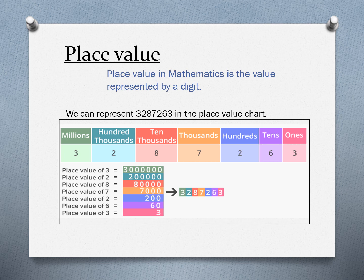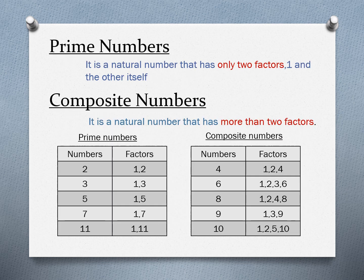Three is in the millions place and its place value is three million. Two is in the hundred thousands place and its place value is two hundred thousand. Eight is in the ten thousands place and its place value is eighty thousand. Seven is in the thousands place and its place value is seventy thousand. Two is in the hundreds place and its place value is two hundred. Six is in the tens place and its place value is sixty. Three is in the ones place and its place value is three. This is called the place value chart.